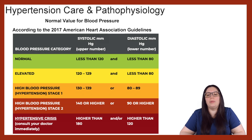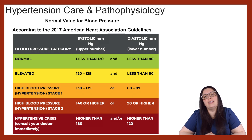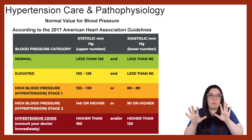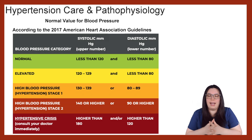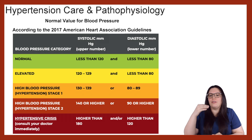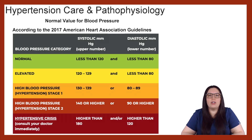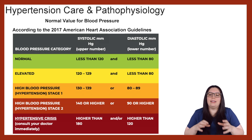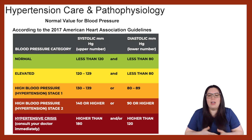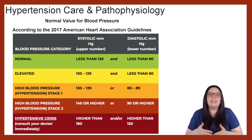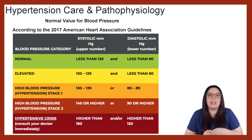When it comes to a normal blood pressure, you're going to see a blood pressure less than 120 systolic and less than 80 diastolic. When we start to see blood pressure elevation, we're looking at systolic between 120 and 129 and diastolic less than 80. When we officially hit hypertension — that high blood pressure — we break that down into three stages: stage one, stage two, and then a hypertensive crisis.